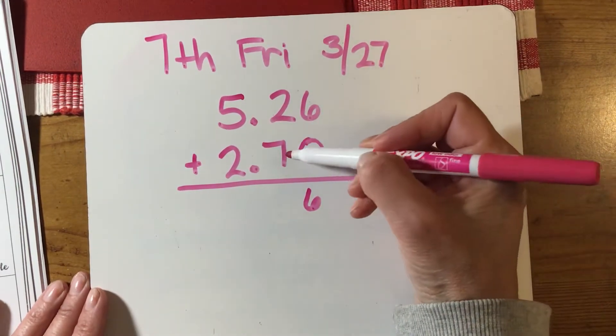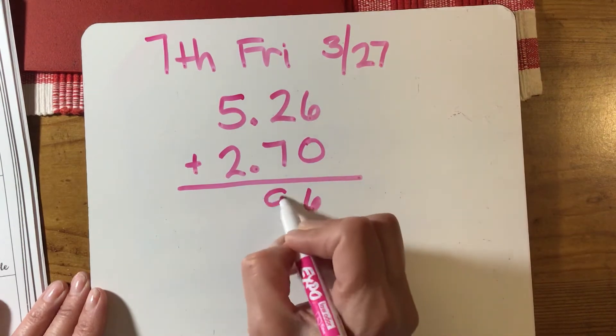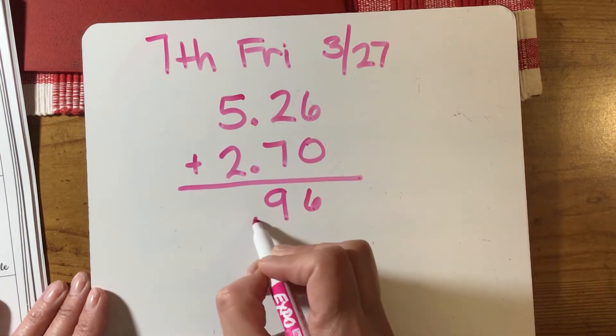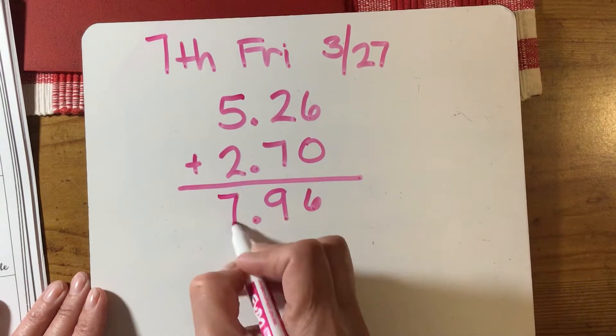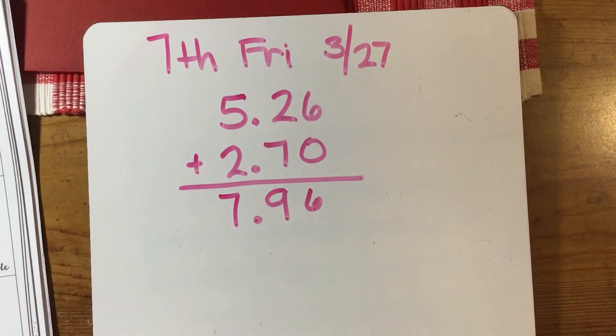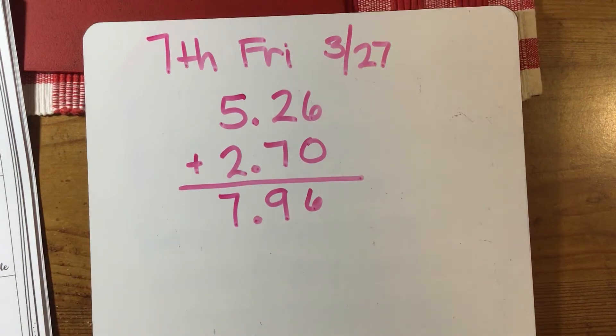Two plus seven is nine. Bring your decimal straight down—nothing changes for your decimal. Five plus two is seven. So the rule for adding and subtracting is: line up the decimals. Now for multiplication, it's a little bit different.